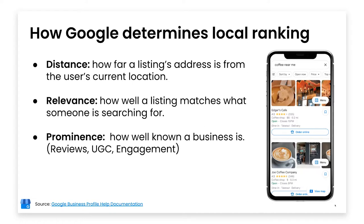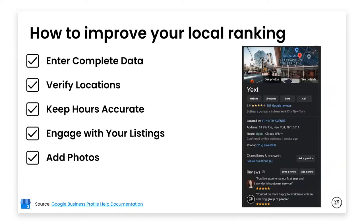Finally, prominence — this is very loosely how well known a business is. These are things like reviews and user-generated content. Making sure you're engaging with reviews, responding to questions on your listing, making local posts, and having local and unique content is a great way to get people to engage. The more people engage with your listings, the better you'll do with local rank. To sum up: you want really good address data, a complete profile everywhere, and you want to make sure you're handling reviews, Q&A, and posting.